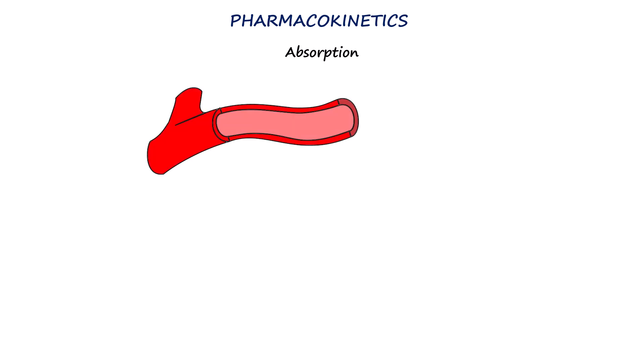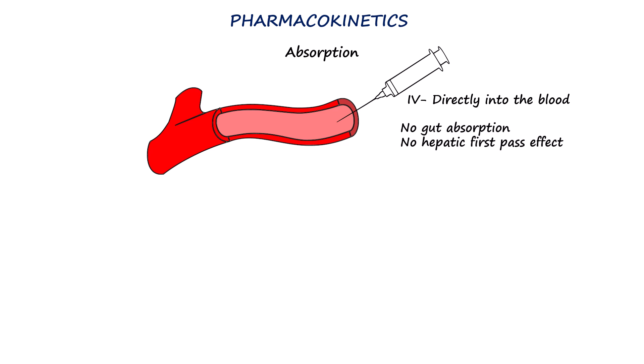The detailed discussion on pharmacokinetic principles of anesthesia drugs was done in a separate video — the link is given here. In this video, we'll simplify and take a look at what happens to an IV drug after its administration in a peripheral vein. The first important point is that the entirety of the drug is bioavailable, as it does not have to be absorbed from the gut or metabolized by the liver, unlike oral formulations.